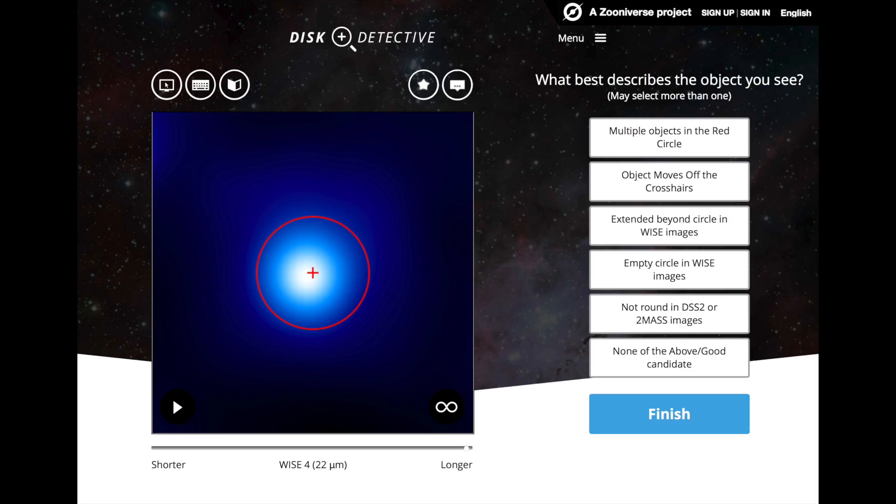When you go to diskdetective.org, you'll see a screen like this. On one side, you'll see a list of buttons you can click on. On the other side, you'll see a 10-second video of one astronomical source seen at several different bands.